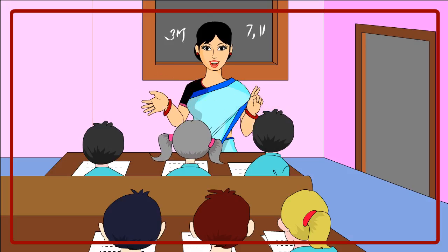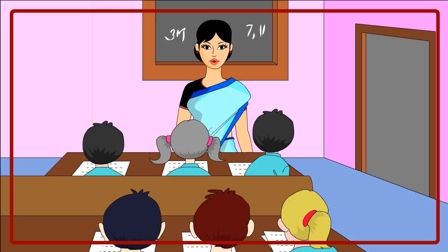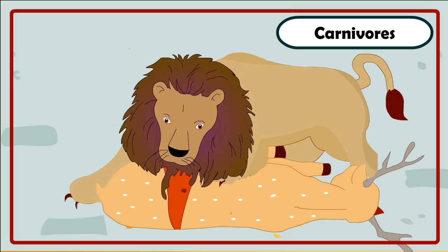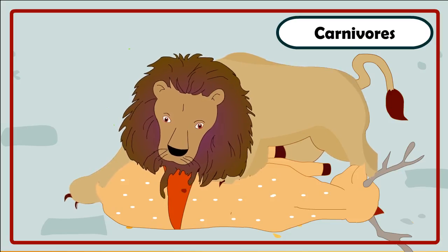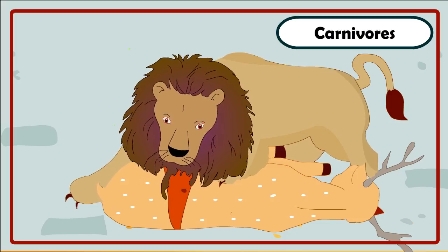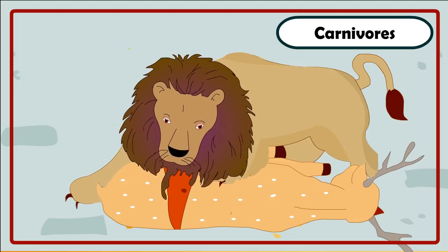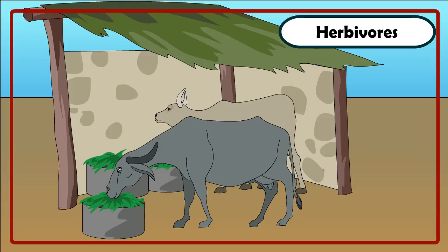Like non-green plants, animals also depend on green plants for their food. Depending on the kind of food animals eat, they can be grouped as carnivores that kill other animals and eat their flesh, like lion, tiger and eagle.